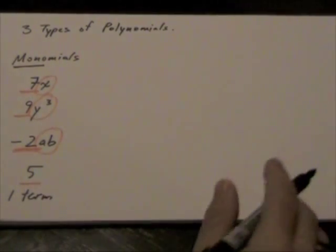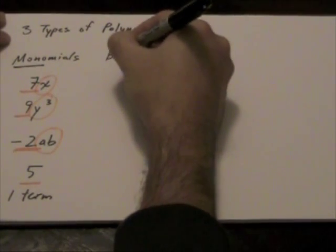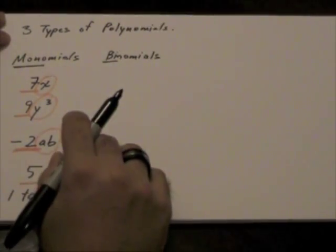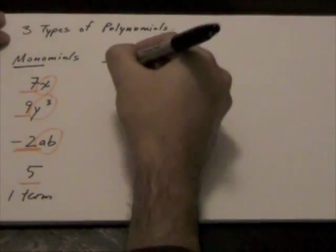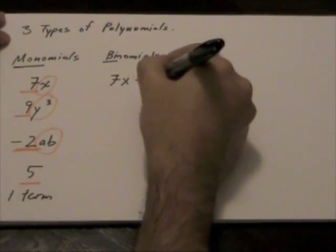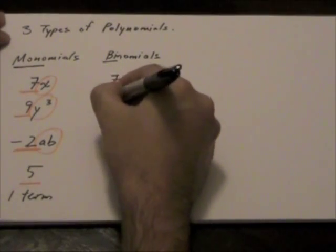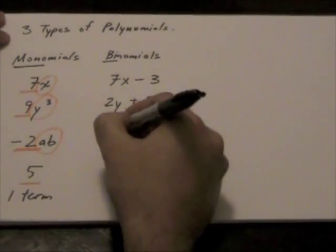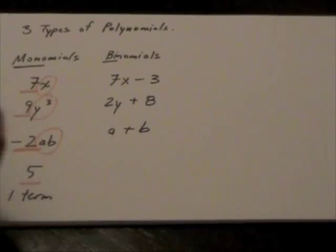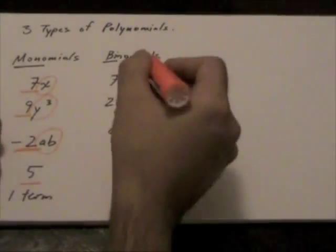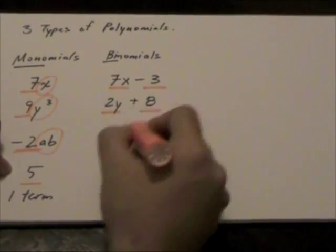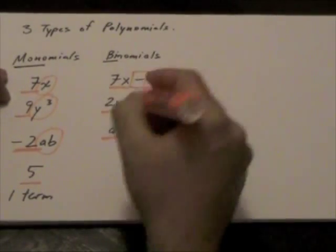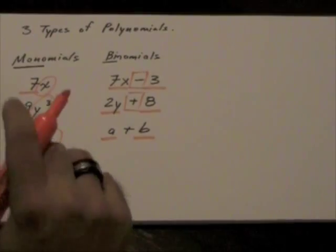Another type of polynomial are called binomials. Example here, now in terms of binomials, meaning two terms. So, an example here would be 7x minus 3, 2y plus 8, a plus b. Now, if we look at any type of binomial, notice how we have two terms. And how do we know the two terms? Well, we have two terms, and they're either separated by an addition or a subtraction.